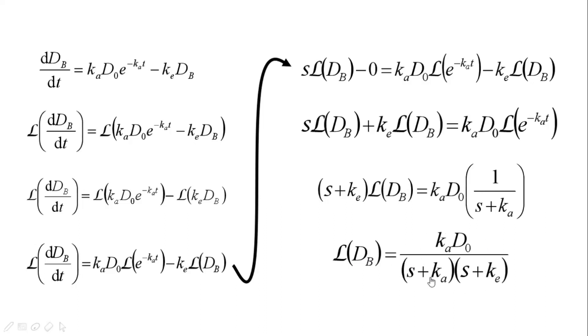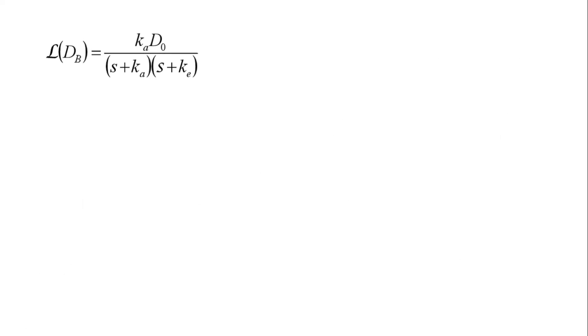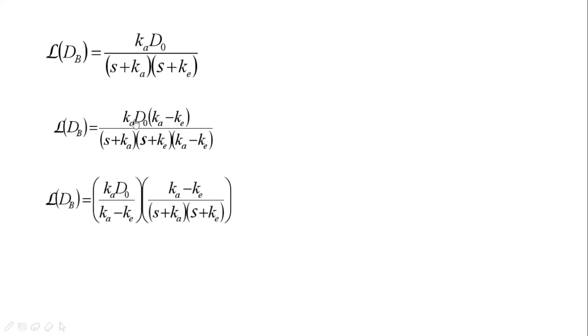Now our goal is to somehow figure out what this is. I just rewrote the equation here, and now I'm gonna do some manipulating. It's just a lot of algebra, so I'm going to multiply the top and bottom by this expression here, ka minus ke, top and bottom. Now we can factor out the ka d zero and the ka minus ke. Take a moment to see that these two are indeed the same.